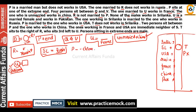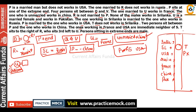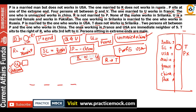The ones working in France and USA are immediate neighbors of S — so France and USA will be on either side of S, one left and one right. T sits to the right of R, who sits third to the left of U. So if U is placed, R will be third to U's left, and T will be immediately to R's right.